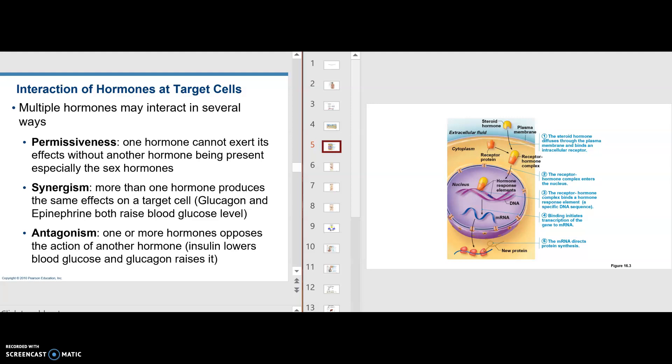Antagonistic is the opposite. One or more hormones oppose the action of another hormone. For example, insulin lowers blood glucose and glucagon raises it. So these are ways hormones can work. Several hormones can work in conjunction.